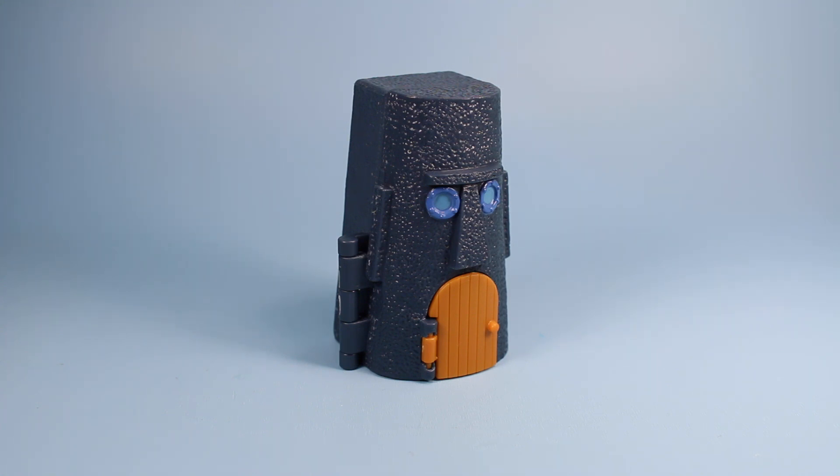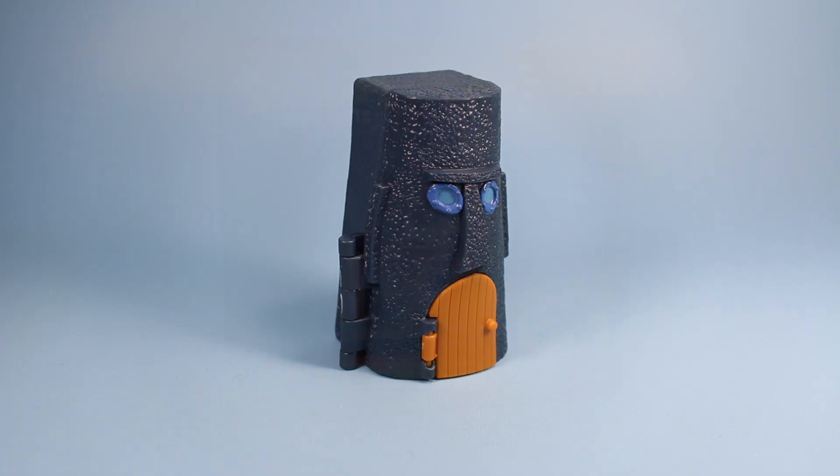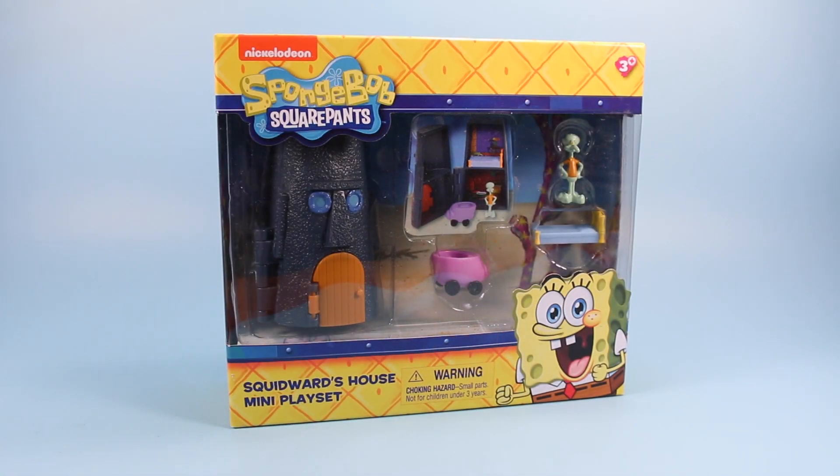Squidward's granite rock head house with wooden door and blue circular eye windows. Going backwards, four underwater toy sets of the rich and famous. The SpongeBob SquarePants Squidward's house mini playset as it would appear on store shelves, ranging in price from $10 to $15.